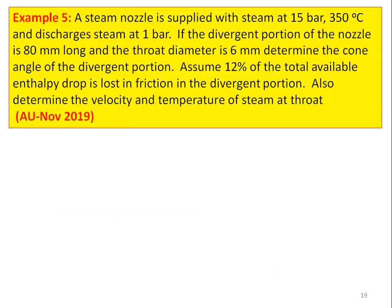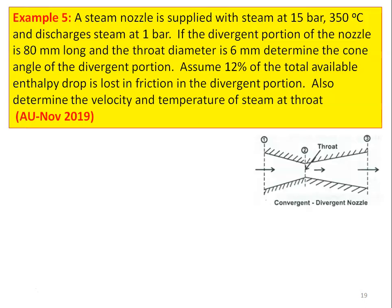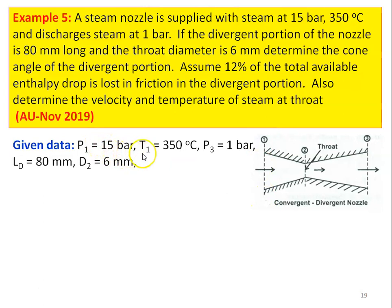Now we take example number 5 from November 2019 question paper. A steam nozzle is supplied with steam at 15 bar, 350°C and discharges steam at 1 bar. The divergent portion is 80 mm long and the throat diameter is 6 mm. Determine the cone angle of the divergent portion. Assume 12% of total available enthalpy drop is lost in friction in the divergent portion. Also determine the velocity and temperature of the steam at the throat. This is a convergent-divergent nozzle with section 1 as inlet, 2 as throat, and 3 as exit. P1 = 15 bar, T1 = 350°C, P3 = 1 bar, length from 2 to 3 = 80 mm, D2 = 6 mm.